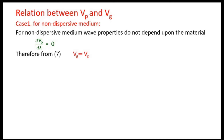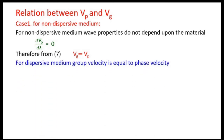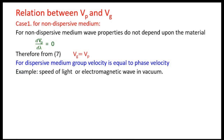Now let's consider some cases. If the wave packet travels in a non-dispersive medium — where wave properties do not depend on the material and are the same in every direction — then dvp/dλ = 0, and equation 7 reduces to vg = vp. An example is the speed of light for electromagnetic radiation in vacuum, which is constant.